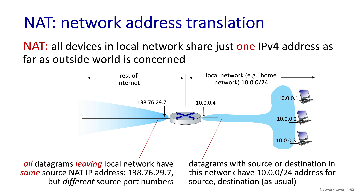On the public-facing interface of this router, which is running NAT, there's a public address: 138.76.29.7. Every packet that passes through the router will have its source address changed from a 10-dot address to this one public address. NAT will also go into the transport protocol layer and manipulate the port numbers, creating a mapping based on port numbers back to the original private IP address. The NAT application maintains a table of these mappings between port numbers and a private IP address and port number pair.